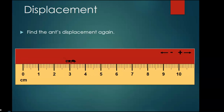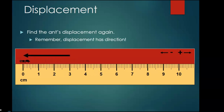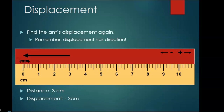Find the ant's displacement again — remember, displacement has direction. The distance is three centimeters, and the displacement is negative three centimeters. Look at the arrow and look at the legend for the direction — negative.